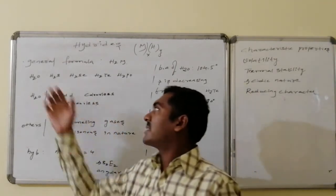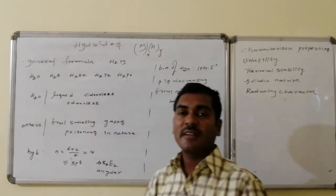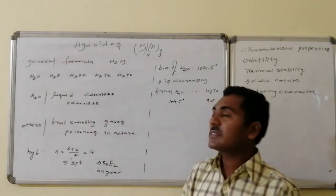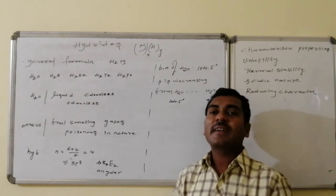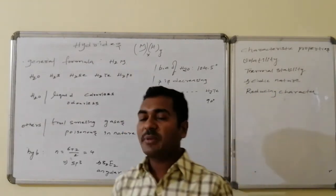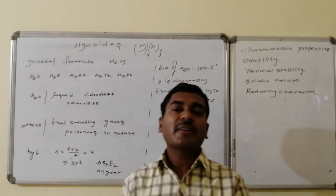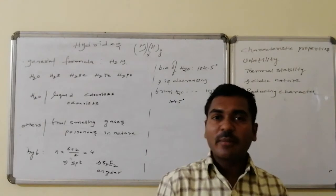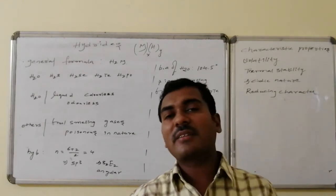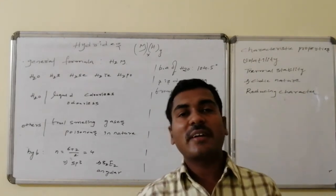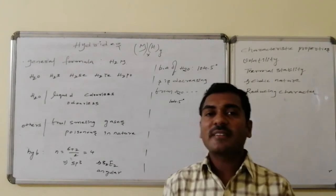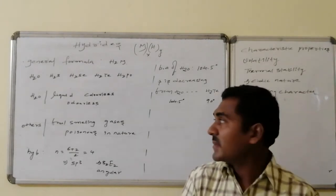The corresponding hydrides are water (H₂O), H₂S, H₂Se, H₂Te, and H₂Po. Since polonium is radioactive, we can eliminate H₂Po. So the hydrides under discussion are water, hydrogen sulfide, hydrogen selenide, and hydrogen telluride.